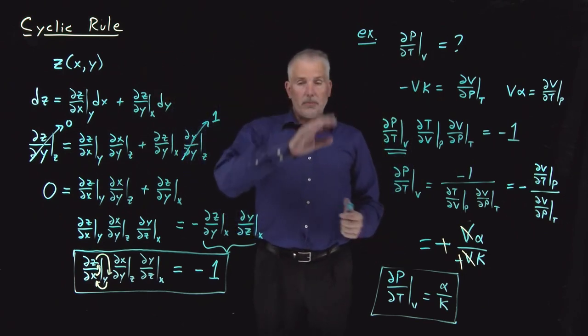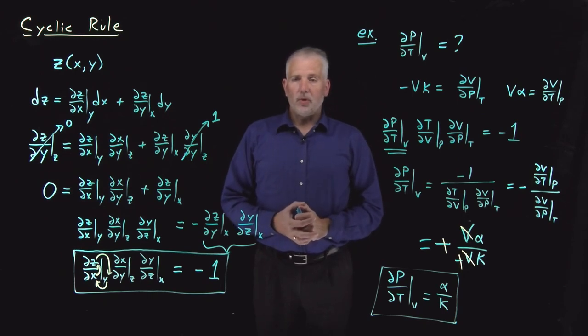Again, that's an example of the cyclic rule. We still have one more partial derivative identity to go that's equally useful, so that's what's coming up next.